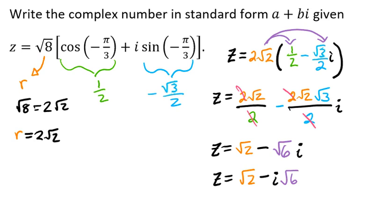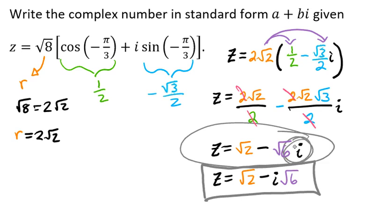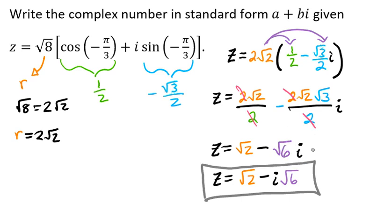And now we've written our complex number from trigonometric form into standard form. You could have written it another way as well, but you really need to make sure that the i stays out from underneath the radical symbol.